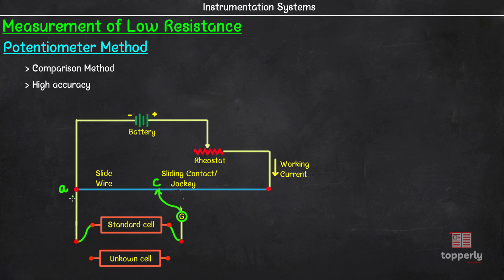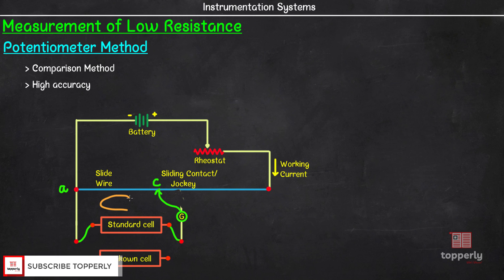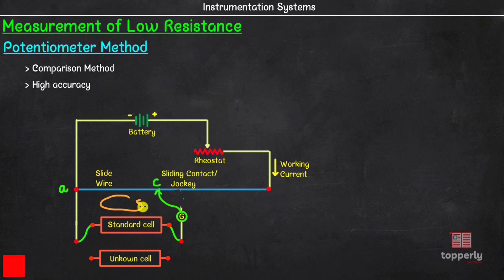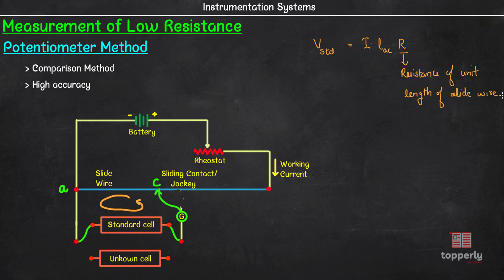Let us name the starting point as point A. The null deflection on the galvanometer means that no current is flowing in this circuit. This happens when the potential difference across length AC of the slidewire is equal to the potential of the standard cell. So we can write: V_STANDARD = I × L_AC × R, where R is the resistance of unit length, I is the working current, and L_AC is the length of slidewire AC.